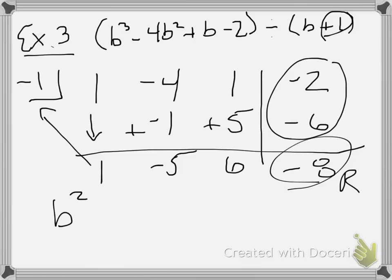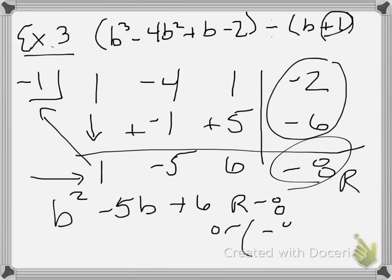So when we go to write our final answer, there's a couple ways we can do it, like we've seen when we did polynomial long division. So the quotient, using these three numbers, will be b² - 5b + 6, and then we can write r -8 for the remainder of -8. Or if you'd like, remember we talked about the fact that we can put a remainder as a fraction, it can say -8 over b + 1.